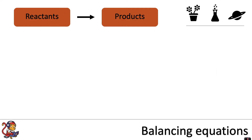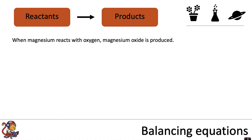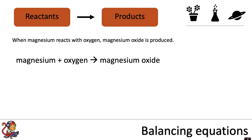In a chemical reaction, we always write the reactants on the left-hand side of the arrow and the products on the right-hand side. So let's look at one chemical reaction and see how we can write it as a word equation. When magnesium reacts with oxygen, magnesium oxide is produced. So we can write that as: magnesium plus oxygen makes magnesium oxide. The magnesium and oxygen are our reactants, and magnesium oxide is our product.